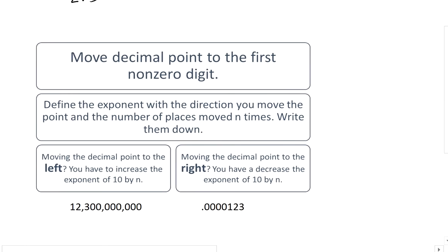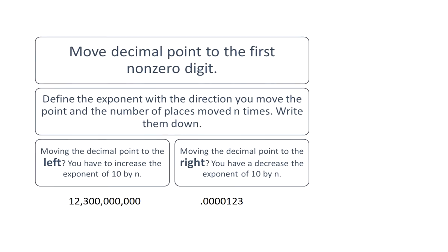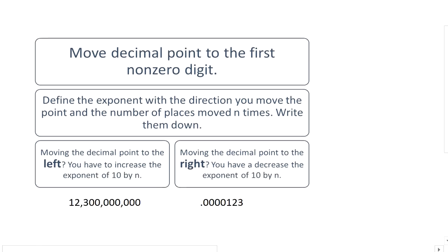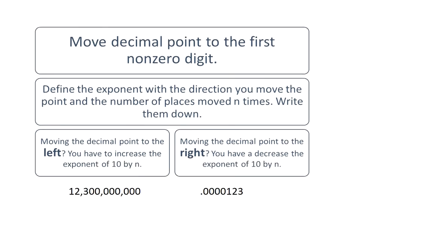Here I made a flow chart, or basically a diagram of how you're going to do that. First of all, here you have the first step, second step, and then the third step is going to depend on what you end up doing with the decimal point, whether you move it towards the left or towards the right.